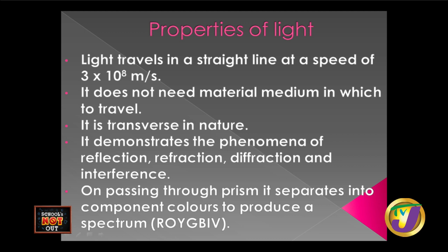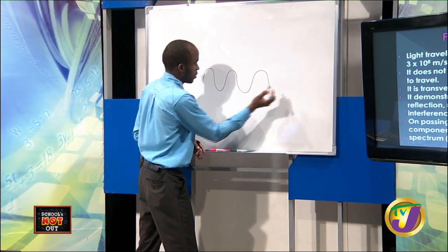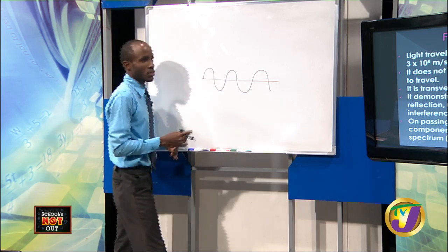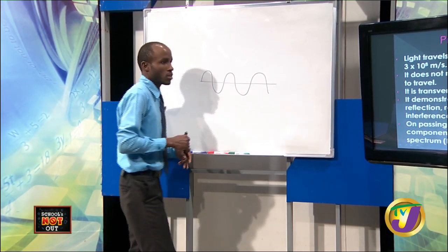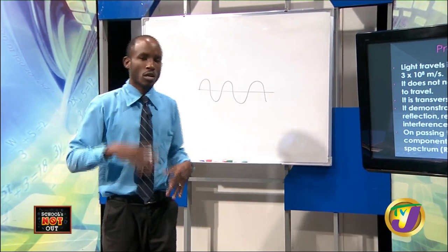There are certain properties of light that you must be aware of. First, light travels in a straight line and at a speed of 3 times 10 to the 8 meters per second — 300 million meters per second. That's blindingly fast. It does not need a material medium in which to travel, meaning it can travel through a vacuum. Light comes from the sun to us, traveling through a vacuum. It's transverse in nature — particles move up and down as the wave travels across.